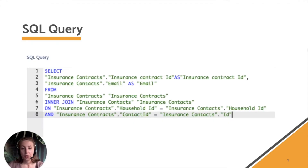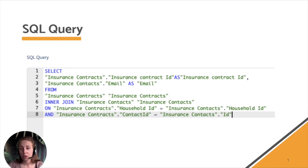Hello, in this video I'd like to explain how to create relationships between two data extensions on multiple fields in Salesforce Marketing Cloud — basically how to create a join not using one field but actually using two, using SQL and Deselect.